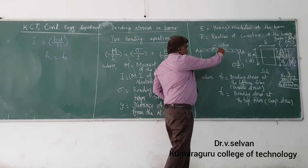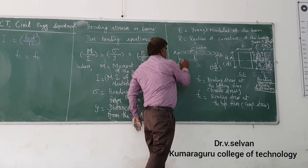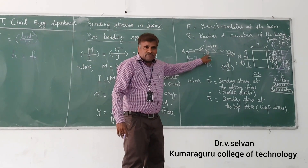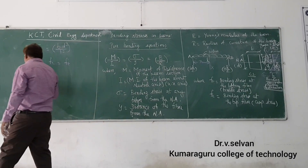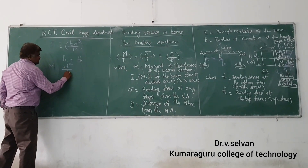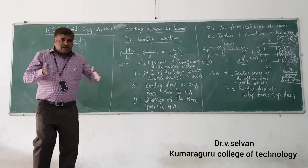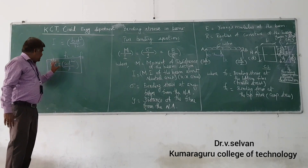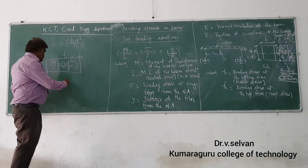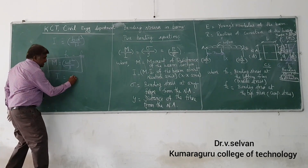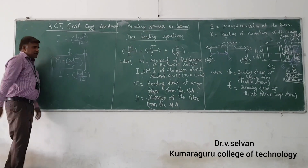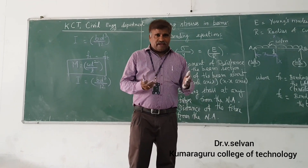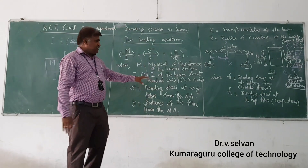For a symmetrical section, you can take the section and find the moment of resistance using the pure bending equation. For maximum bending, it occurs at the maximum bending moment at the center of the beam, and that is WL²/8. The moment of inertia for a rectangular section is bd³/12. For a circular section, I = πd⁴/64. For a square section, it is a⁴/12.